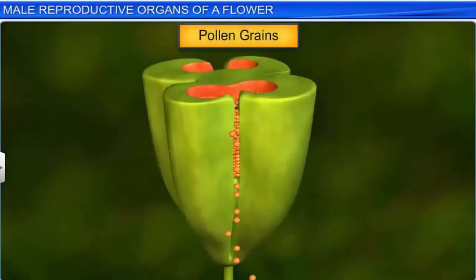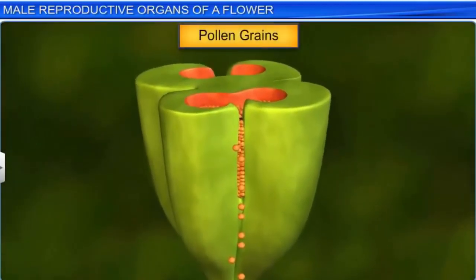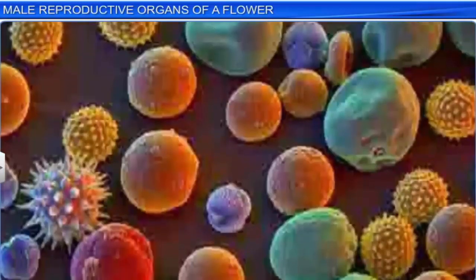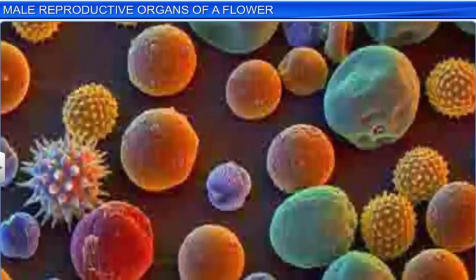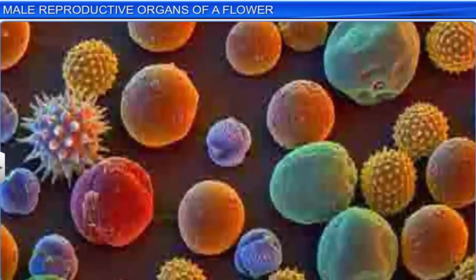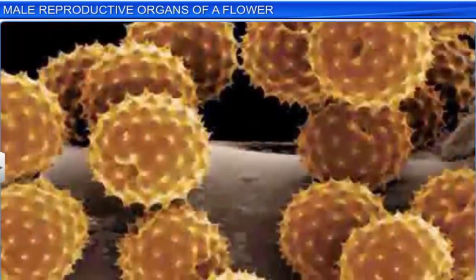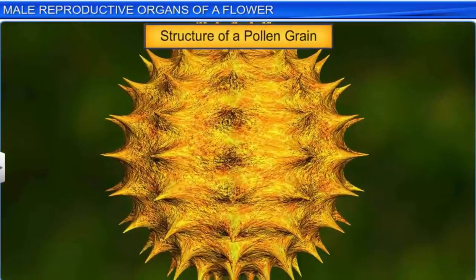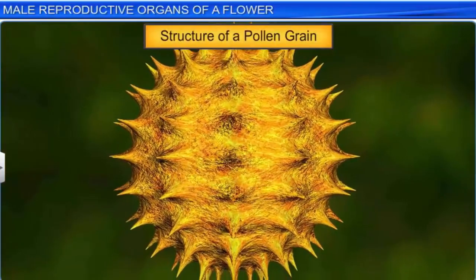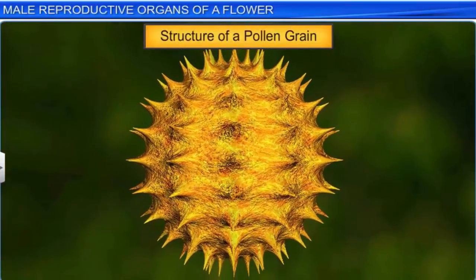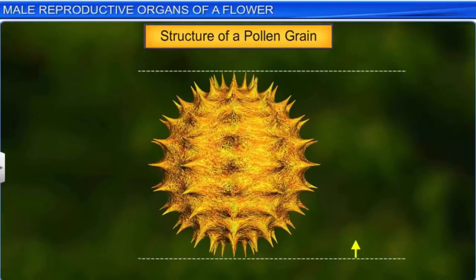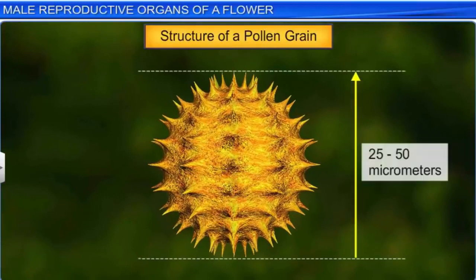Pollen grains, which represent the male gametophyte, come in a wide variety of sizes, shapes, and colors. A typical pollen grain, however, is spherical in shape and has a diameter measuring about 25 to 50 micrometers.